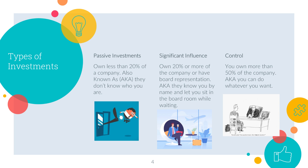The last type of investment is called control or consolidation, which essentially means you own more than 50% of the company. It's also known as you can do whatever you want. You're the big boss — you can tell everyone what to do and how to run the company, and no one can tell you otherwise.